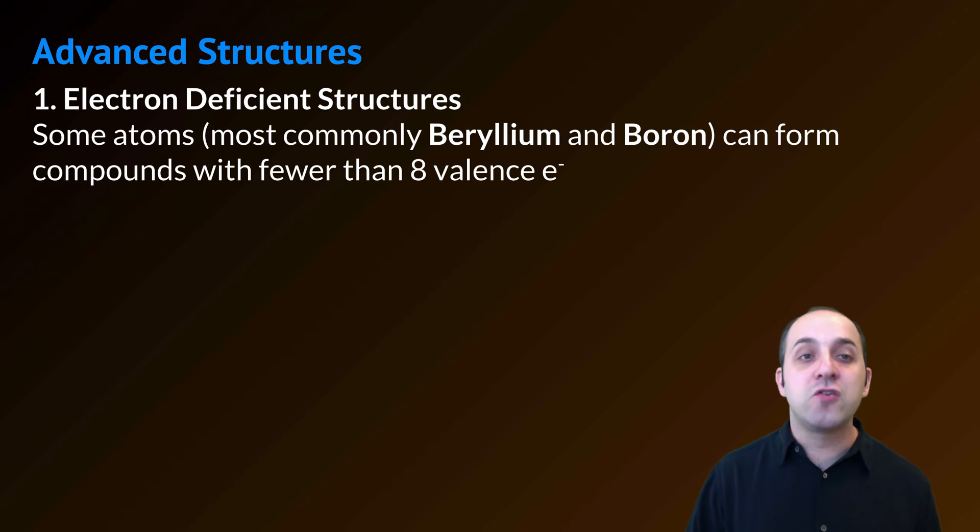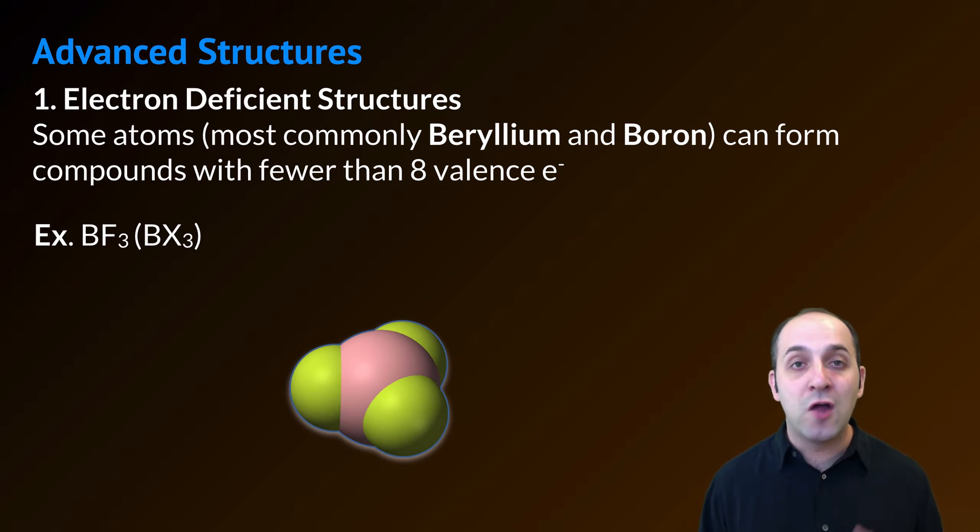Our first group of structures are what we call electron-deficient structures. This means that one of the atoms in the structure is going to have less than eight total valence electrons when it's all said and done. This is basically only seen in beryllium and boron-containing structures. Our example is boron trifluoride, or BF3. Certainly, BF3 is not the only time you see this. Really, you can see it anytime you have a formula with the structure BX3, where X is any atom we want to put into it.